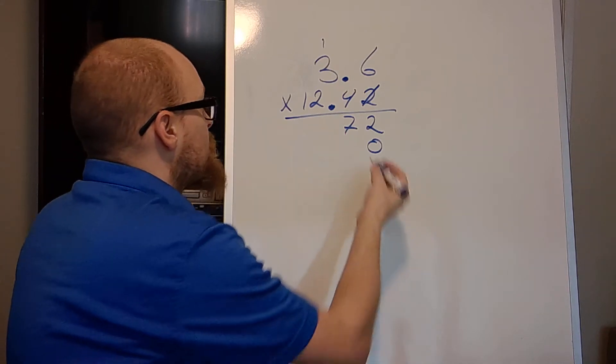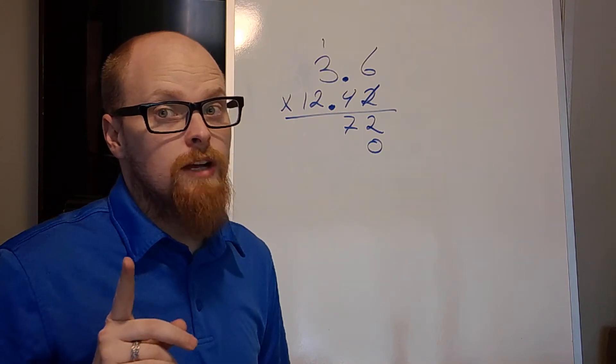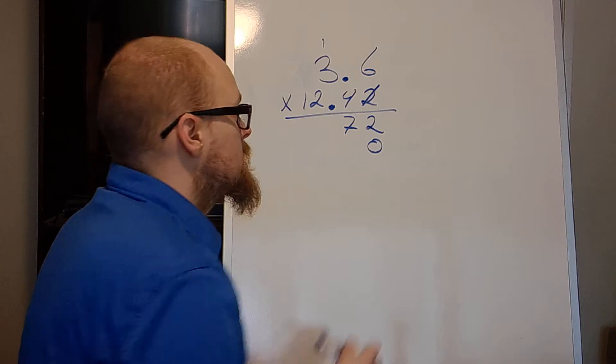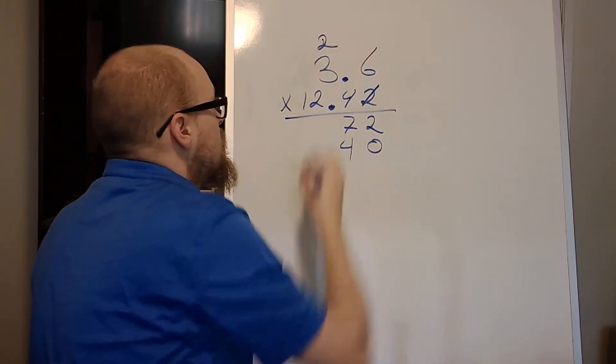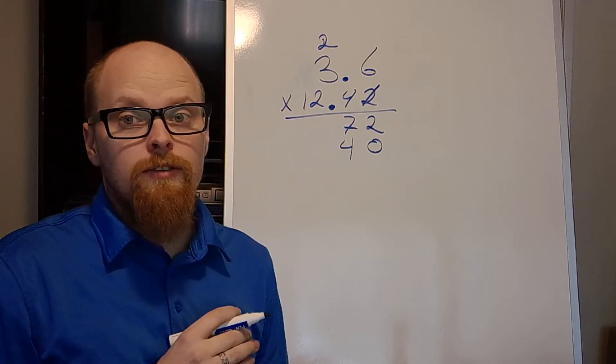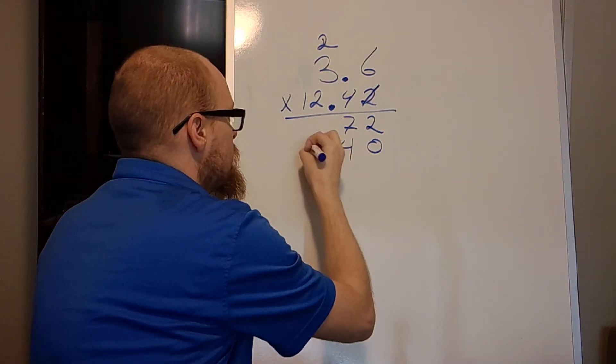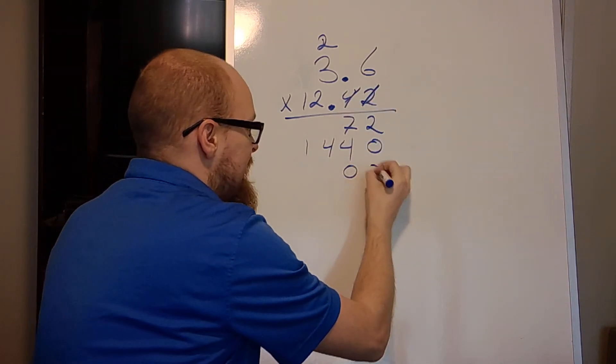So now you can work around a 4. 4 times 6 is 24. Got my 4. I bring up my 2. 3 times 4 is 12, plus 2 is 14. That's my last number, so 14. And I keep going until I get to the end.